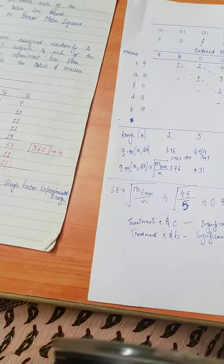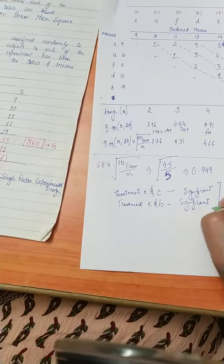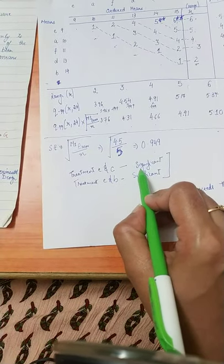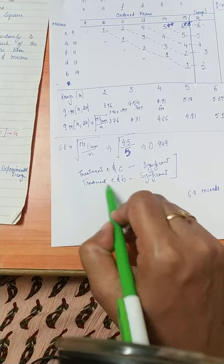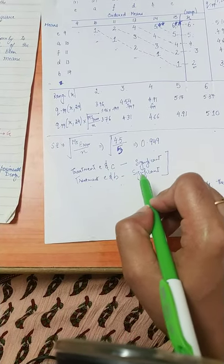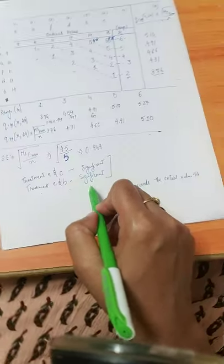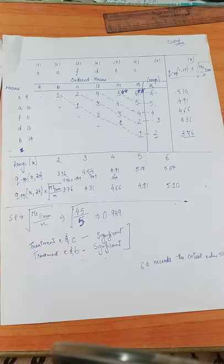So hence the Newman-Keuls test has revealed that treatment number E and C is coming out to be significant, and treatment number E and B is also significant. So this is it.